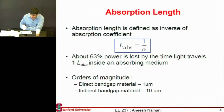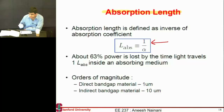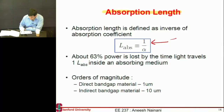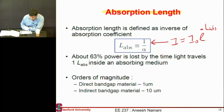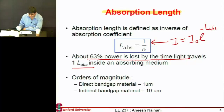The first thing is absorption. The parameter used to describe that is the absorption length or the absorption coefficient, and these two are inverses of each other. If you have a high absorption coefficient, it means you have a low absorption length. The intensity of light falls exponentially as a function of your absorption coefficient or absorption length. Within one absorption length, you typically absorb 63% of the total intensity of the incoming light.